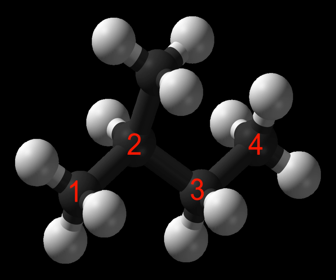In organic chemistry, an alkane, or paraffin — a historical name that also has other meanings — is an acyclic saturated hydrocarbon. In other words, an alkane consists of hydrogen and carbon atoms arranged in a tree structure in which all the carbon-carbon bonds are single.